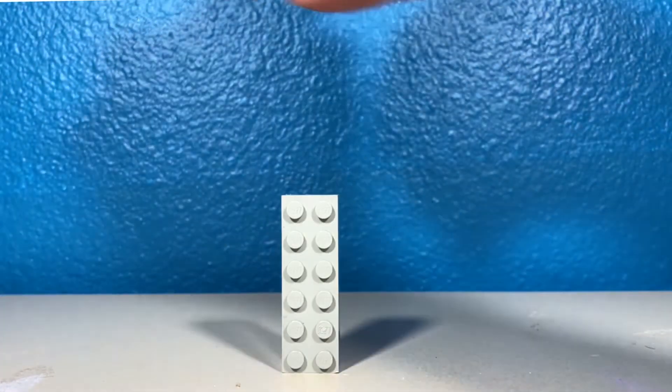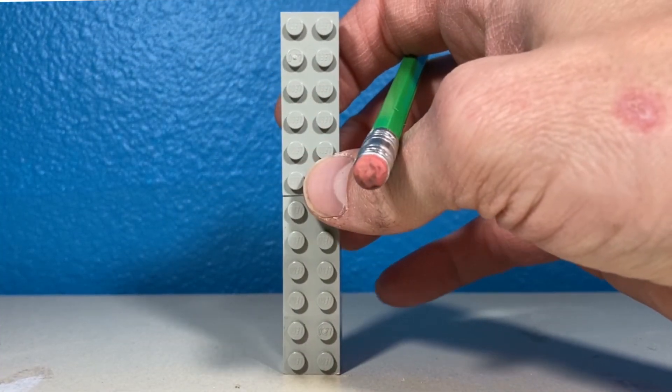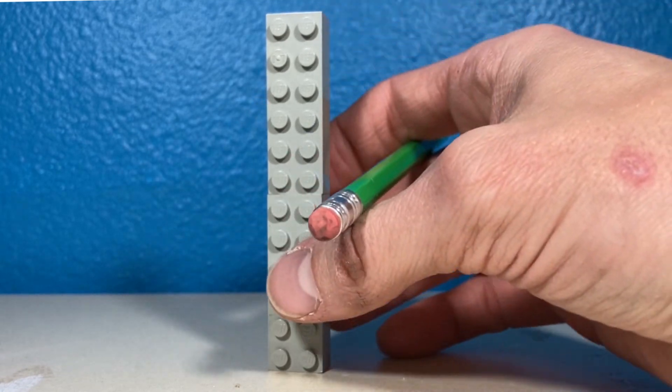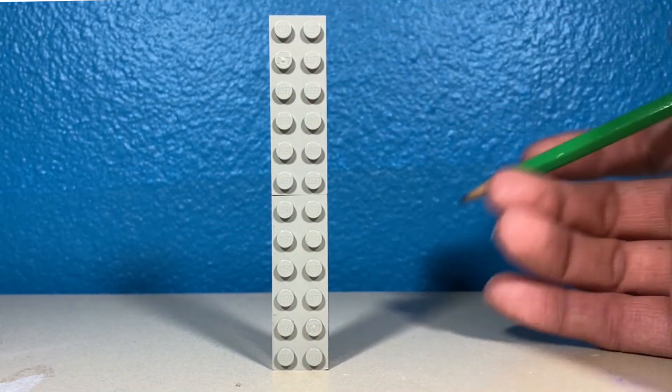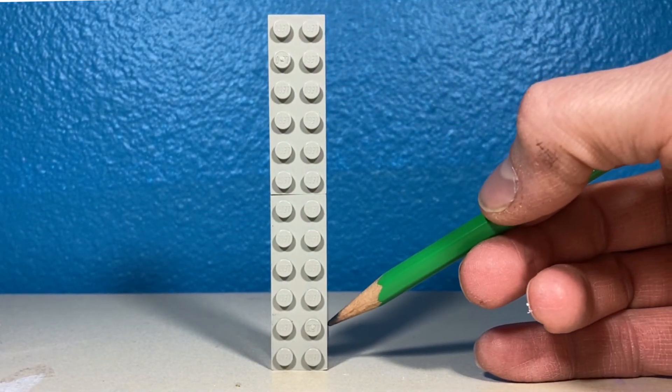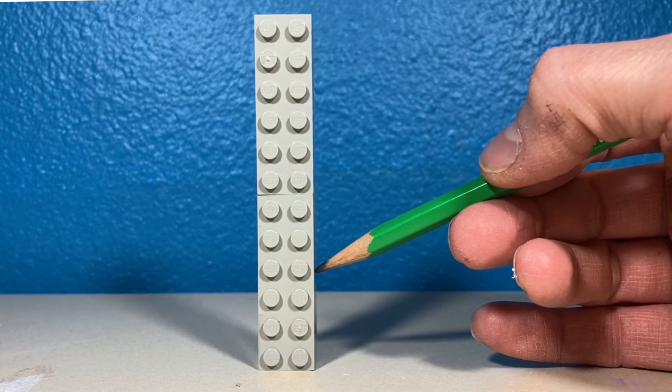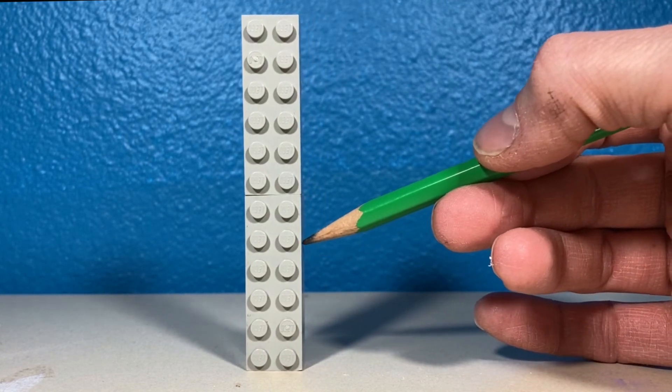So if I take two blocks and stack one on top of the other, we effectively have a block that is now twice as tall as our original. If I push on this, still four up it's sliding. Once I get up here to five, it tips.